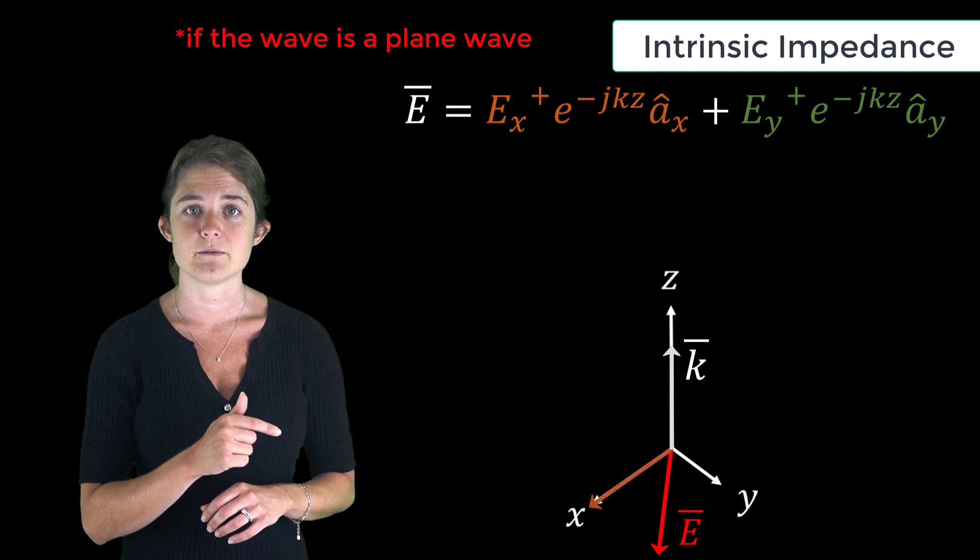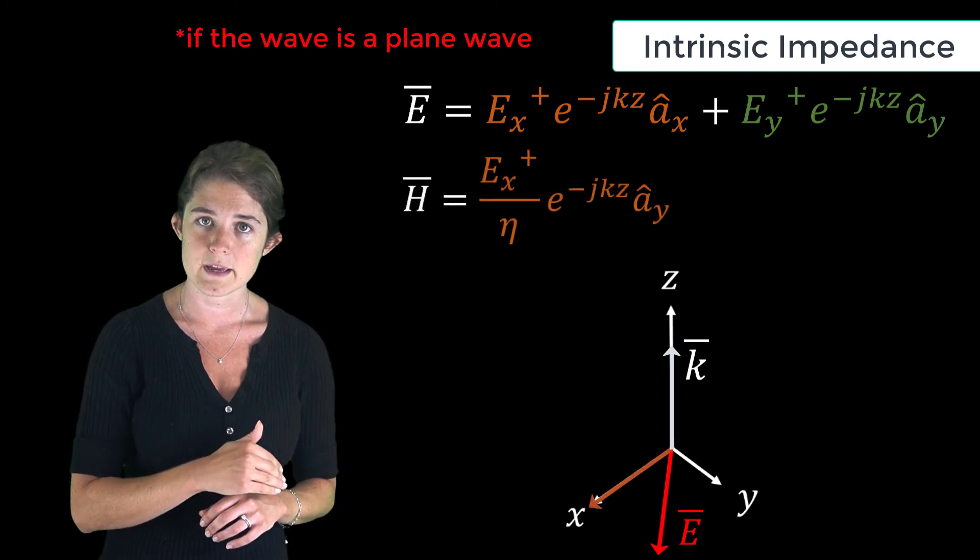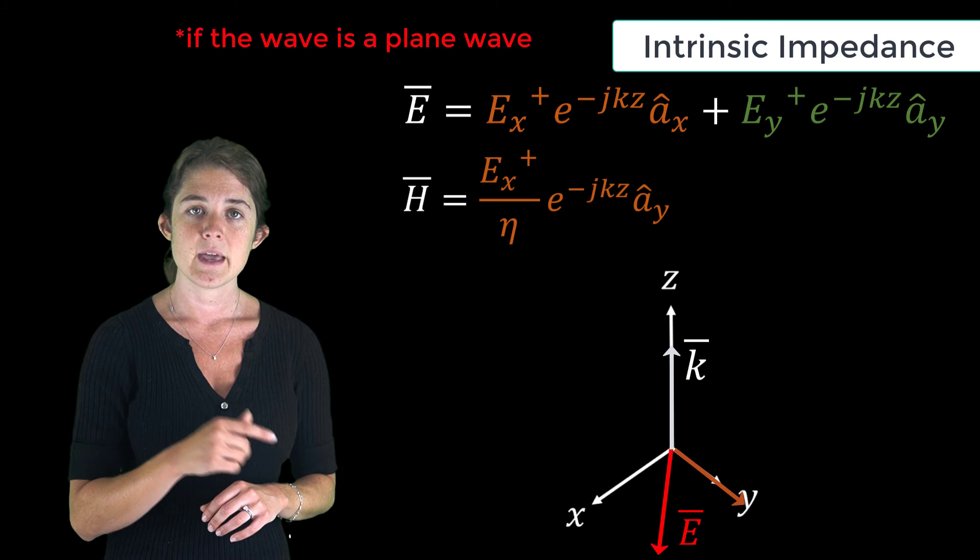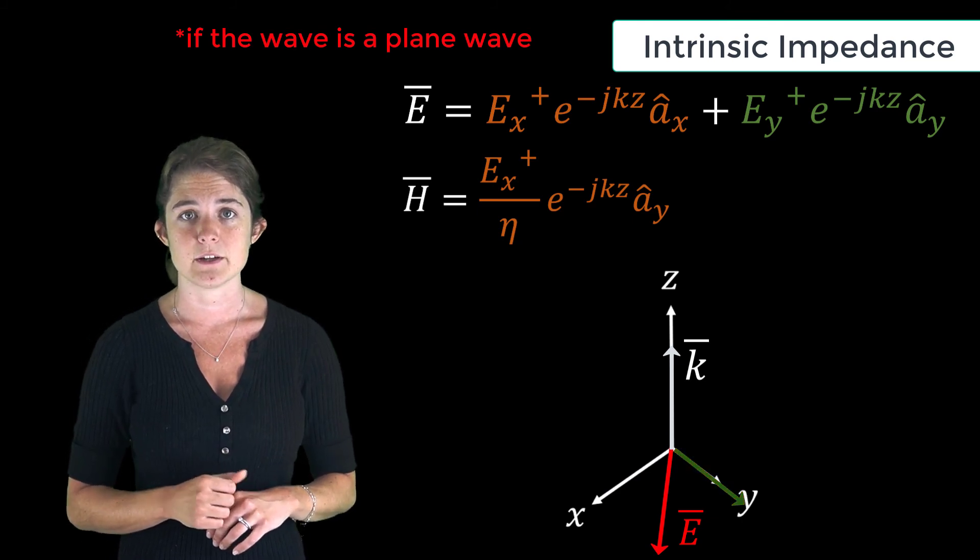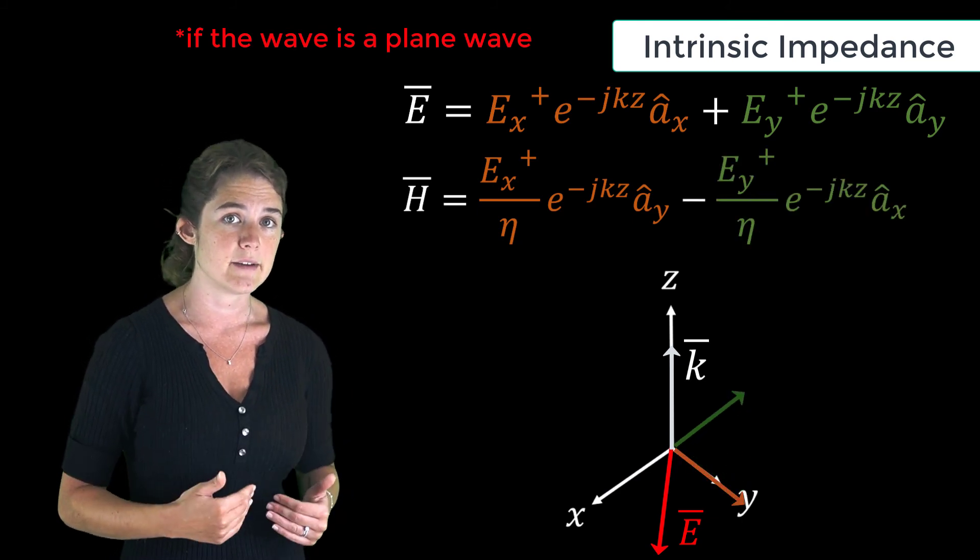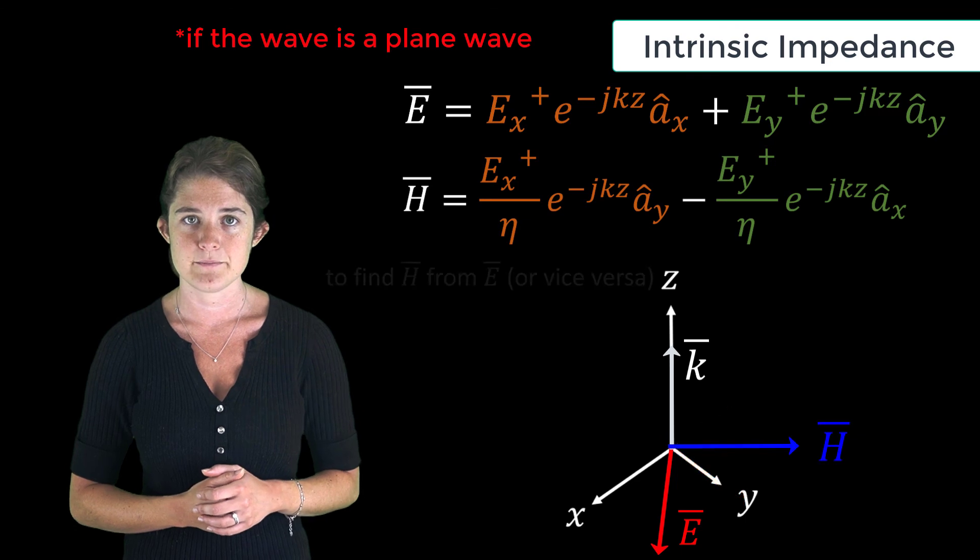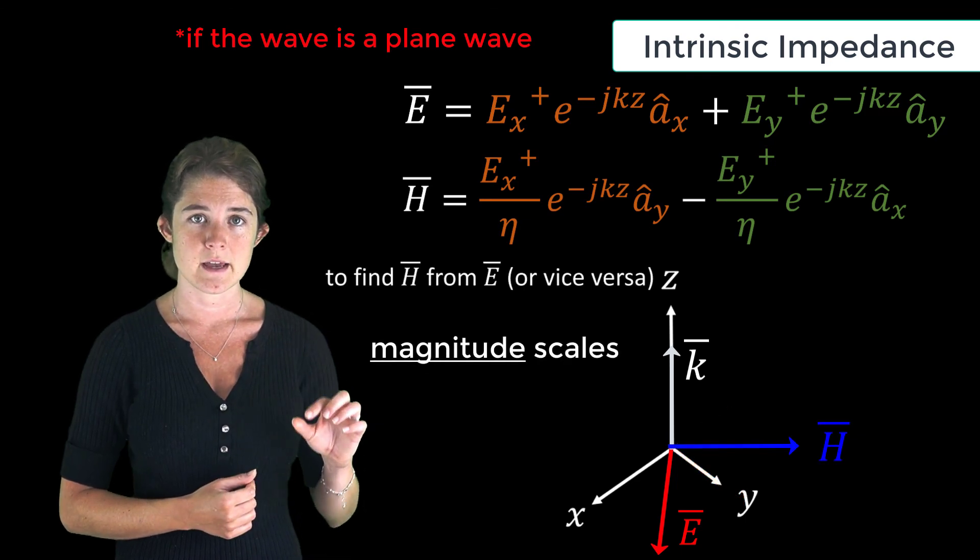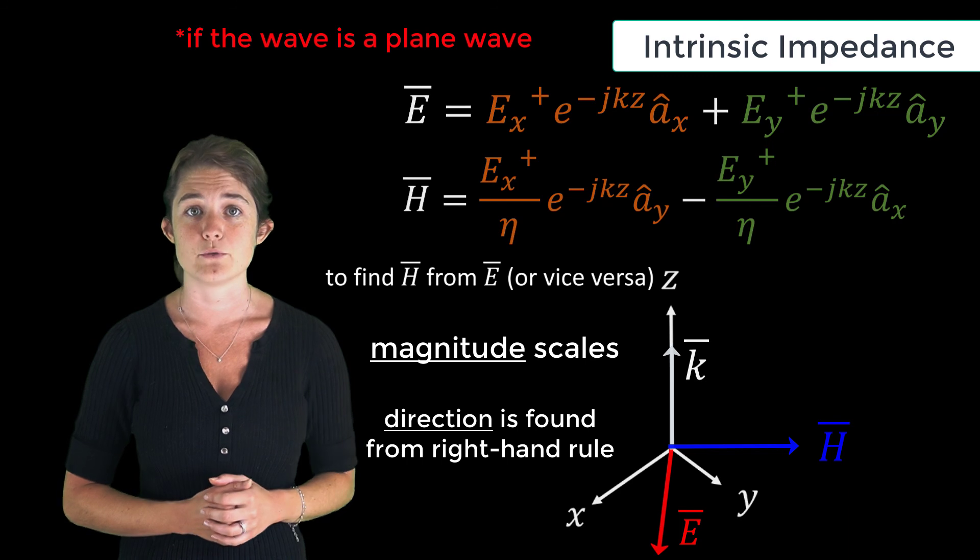So the x component of the electric field will contribute a scaled y component to the magnetic field, and the y component of the electric field will contribute a scaled negative x component to the magnetic field. The magnitude scales and the new directions are simply found using the right-hand rule.